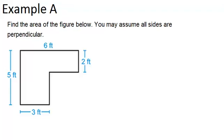In example A, it says to find the area of the figure below, you may assume all sides are perpendicular. So this is a composite shape because it's really just made up of two different shapes that we know.